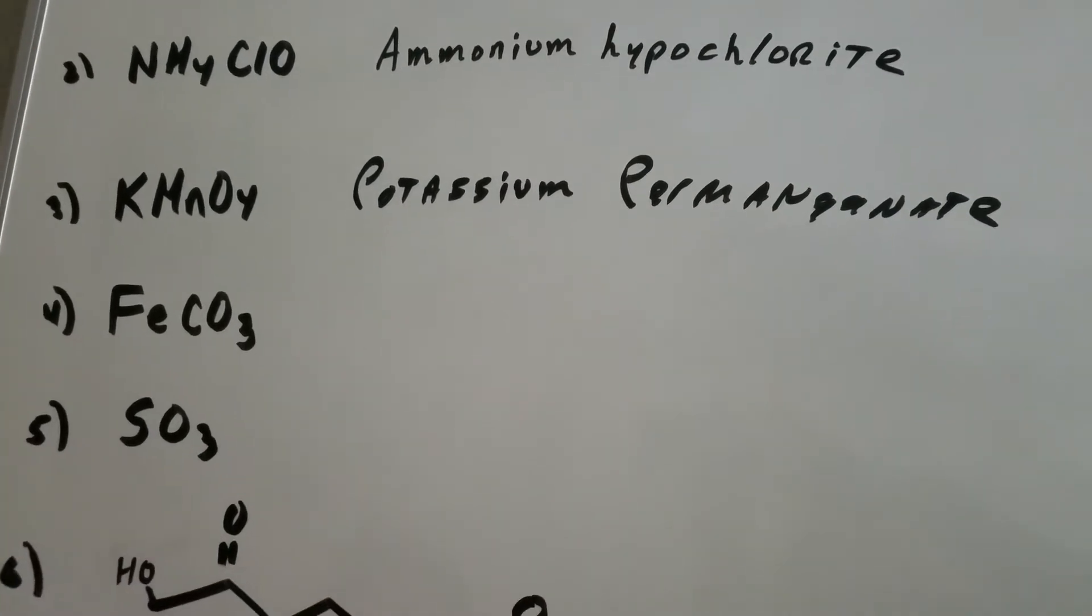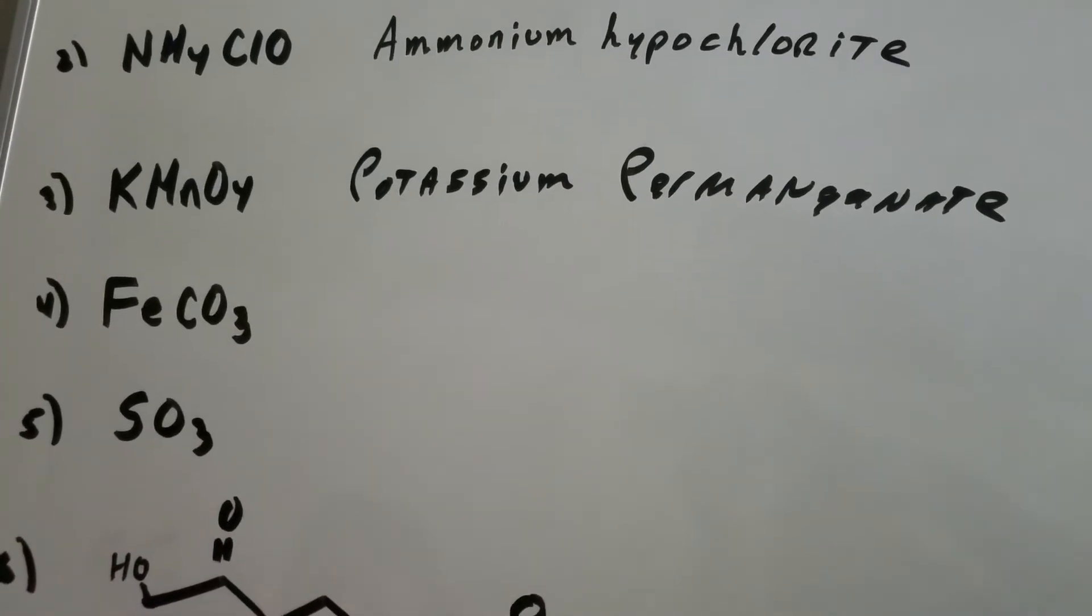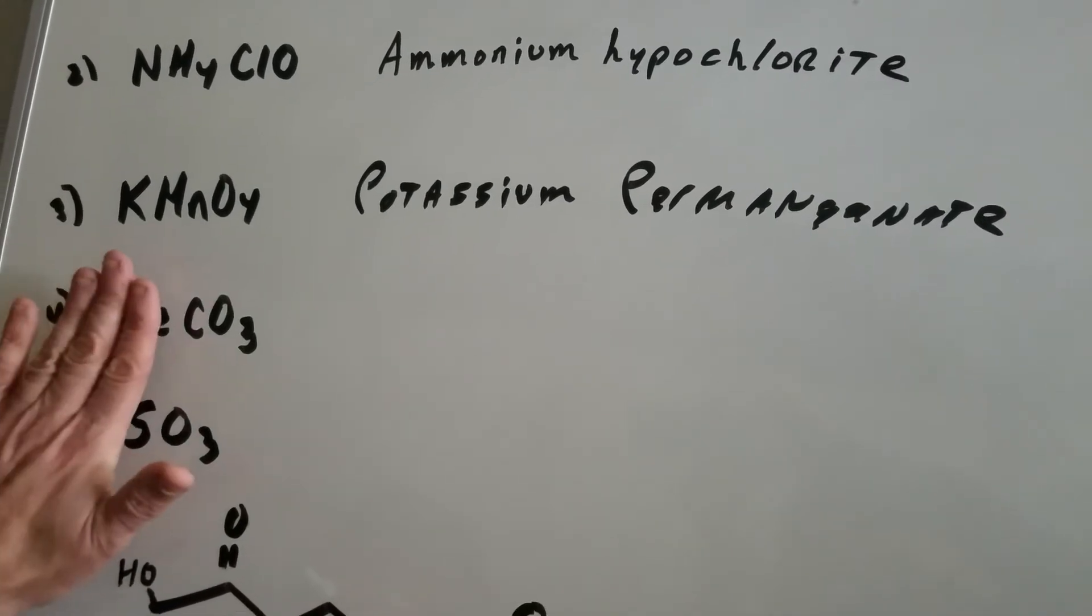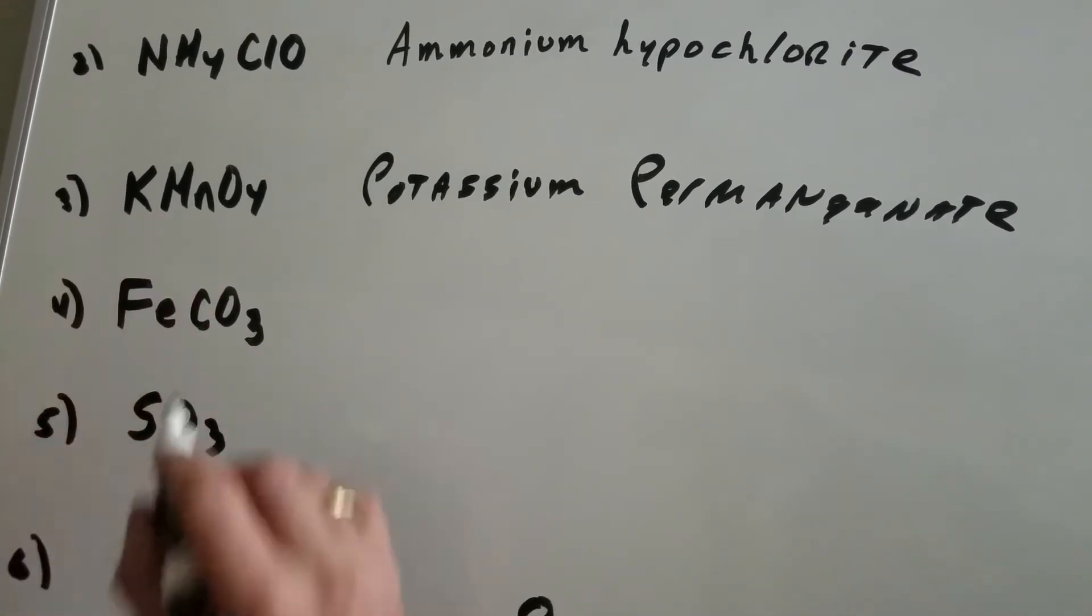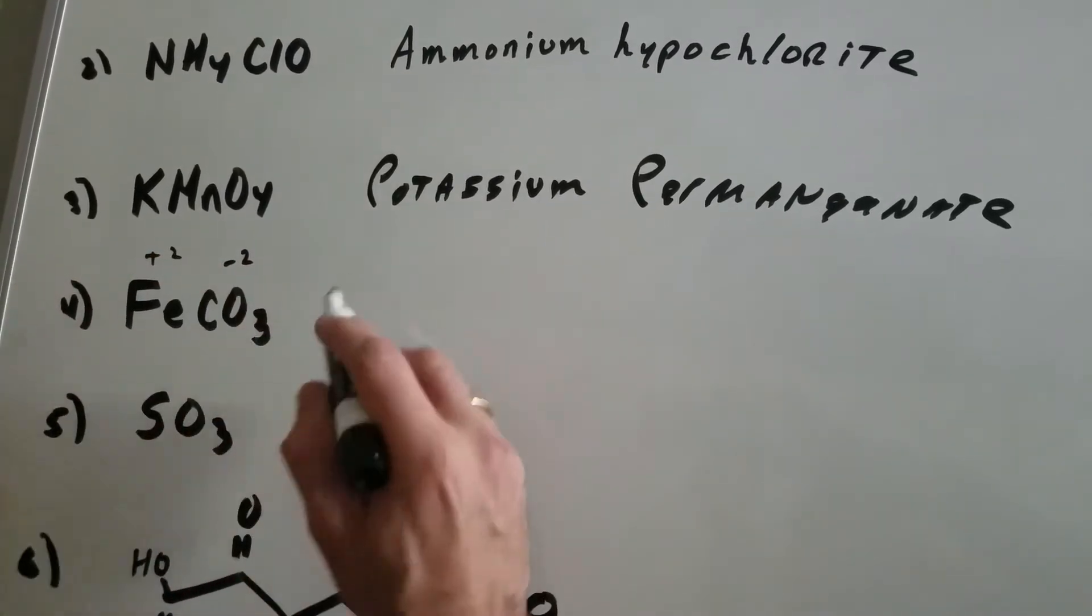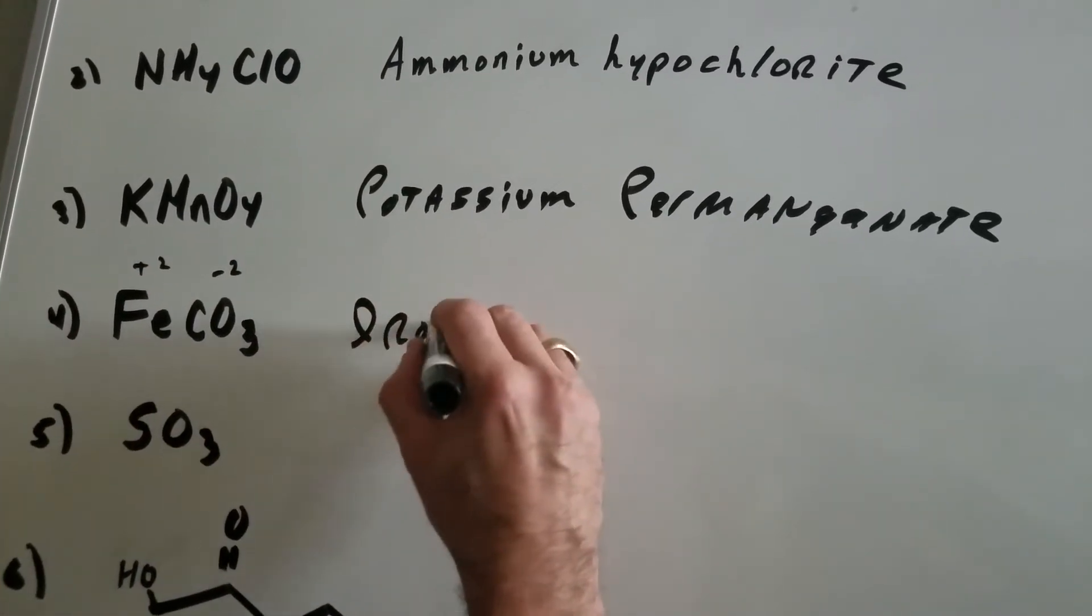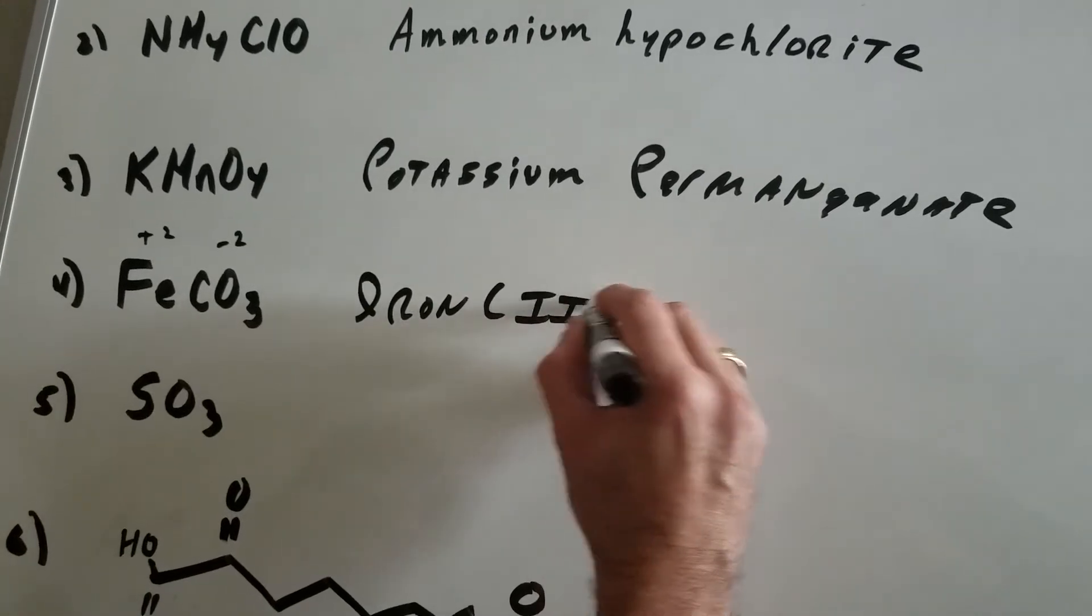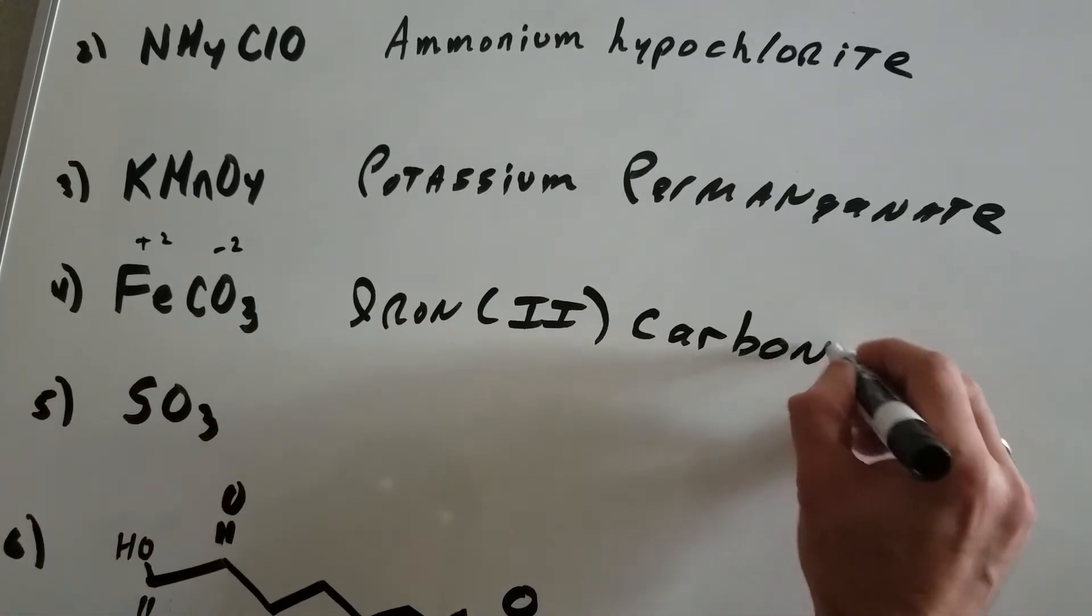The next one is an interesting one. Whenever you see a transition element, always think of Roman numeral. So if you put your finger over this, this is carbonate. Carbonate has a minus 2 charge, so iron would be plus 2. So this would be called iron(II) carbonate.